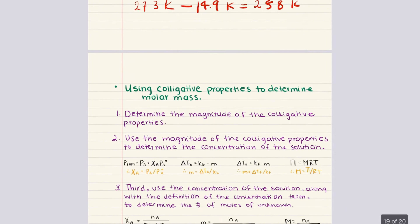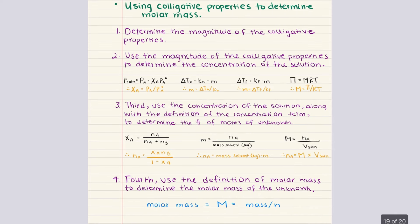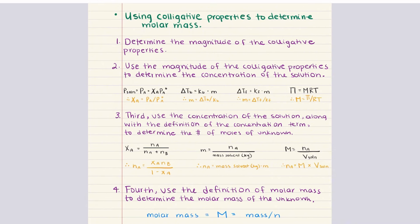Wonderful. Let's move on to our next topic. Here we're going to discuss how to use colligative properties to determine molar mass. In order to determine molar mass from colligative properties we need to follow four main steps. The first step is to determine the magnitude of the colligative property — vapor pressure lowering, boiling point elevation, freezing point depression, or osmotic pressure — which are directly related to the concentration of the solute in the solution.